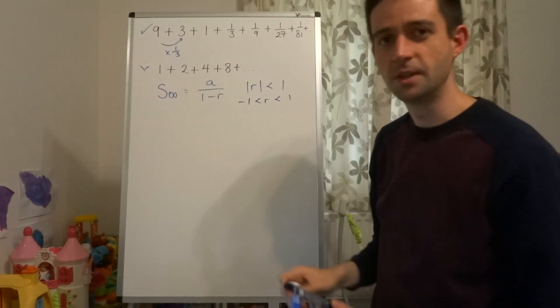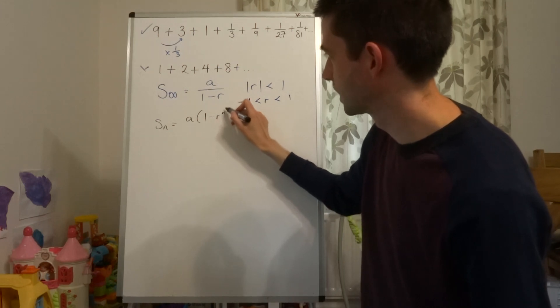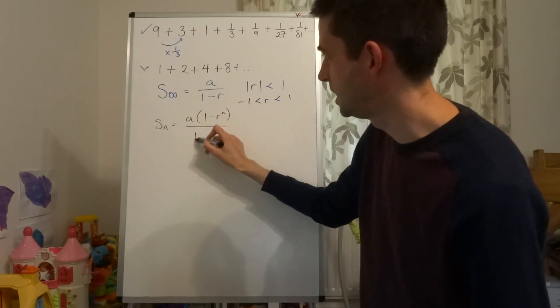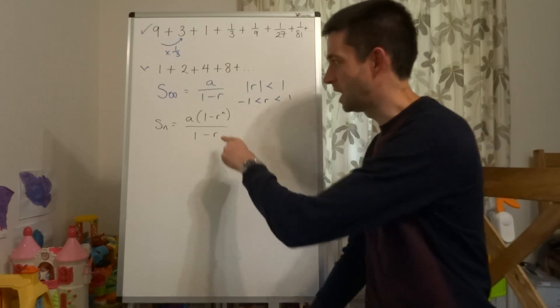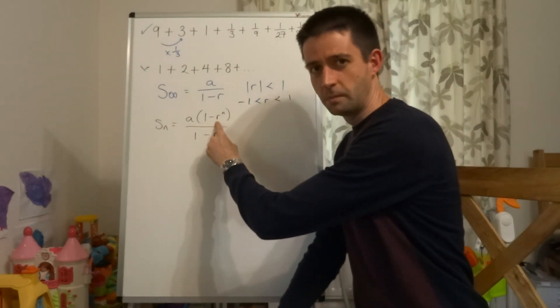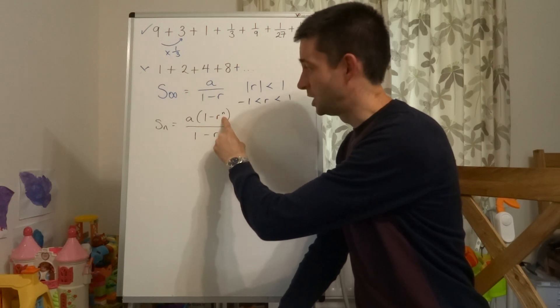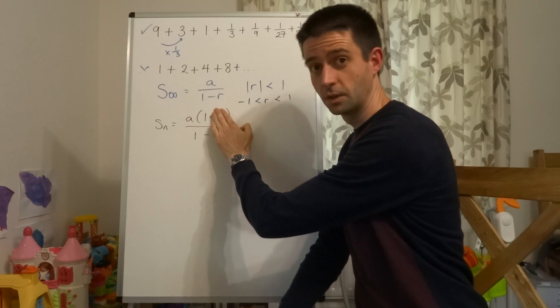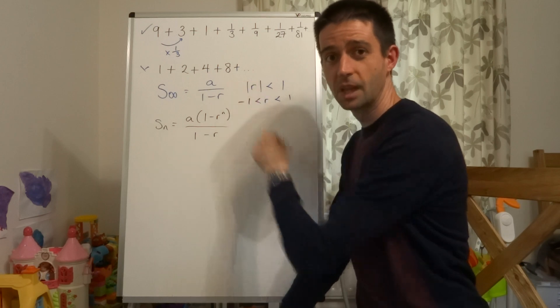Now, you may be looking at that and thinking, that looks awfully similar to the sum to n terms. And it is awfully similar because the sum to n terms is a times 1 minus r to the n over 1 minus r. Now, let's just think about how you get to this from this. If r is a small number and you raise it to a really big power, it's going to get closer and closer to 0. So what's actually going to happen is this value here gets closer and closer to 0, which means that this bracket gets closer and closer to 1. So the sum of the series tends to a times 1 over 1 minus r, which is what we have here. So that's where it comes from.